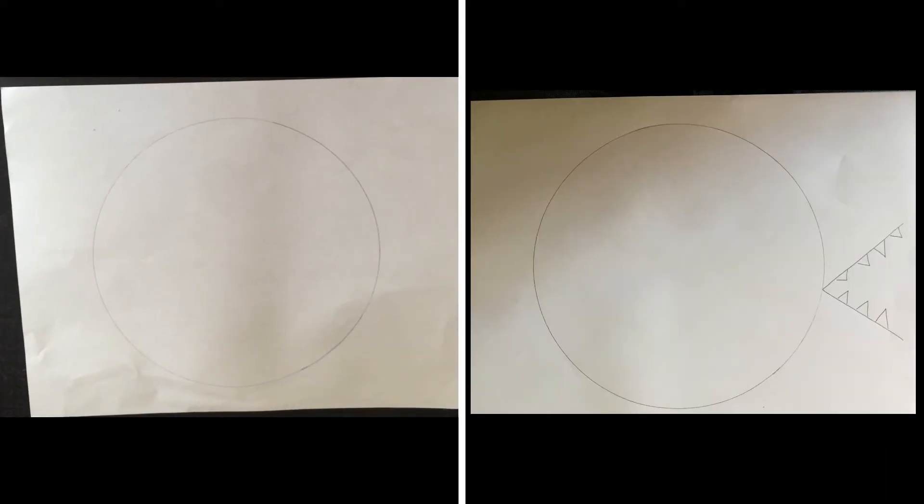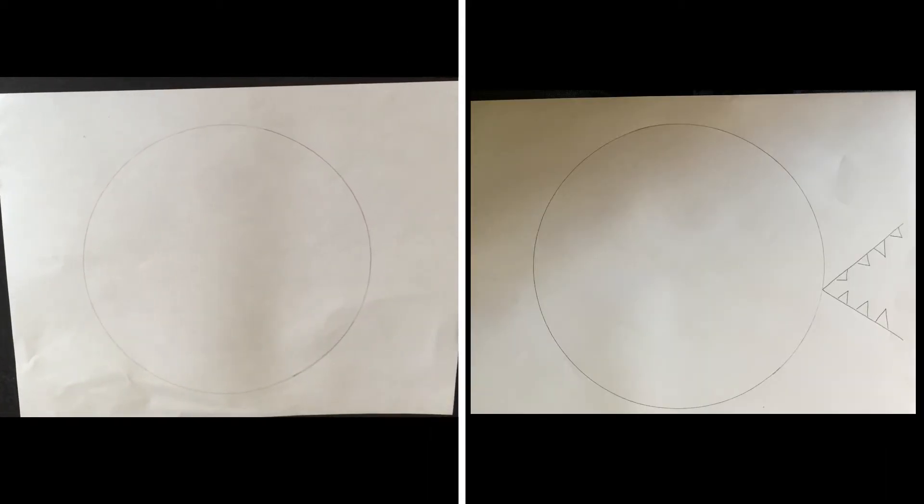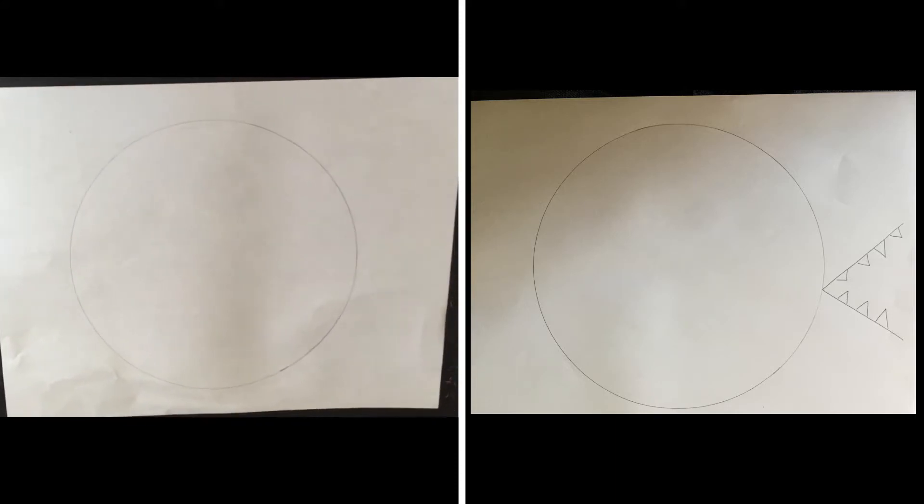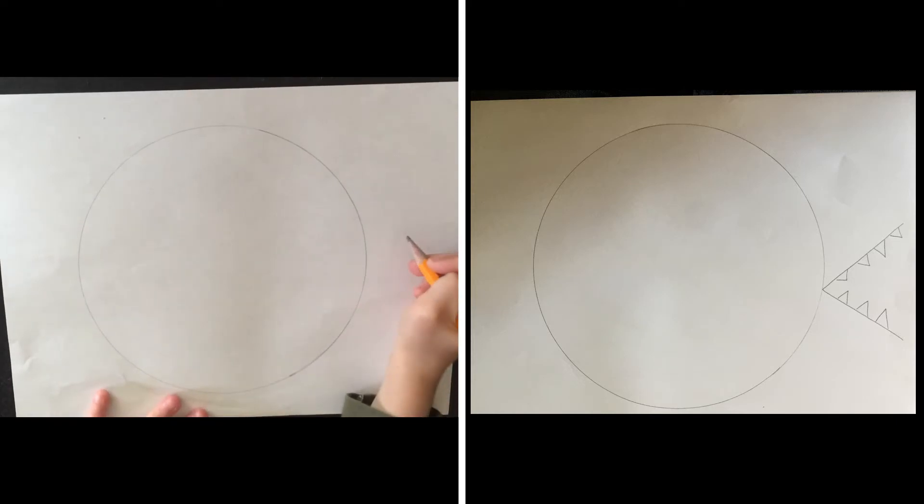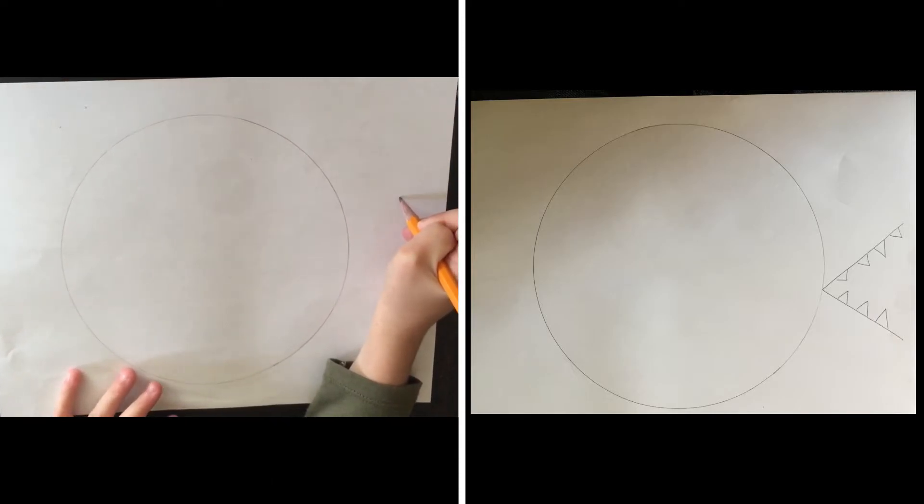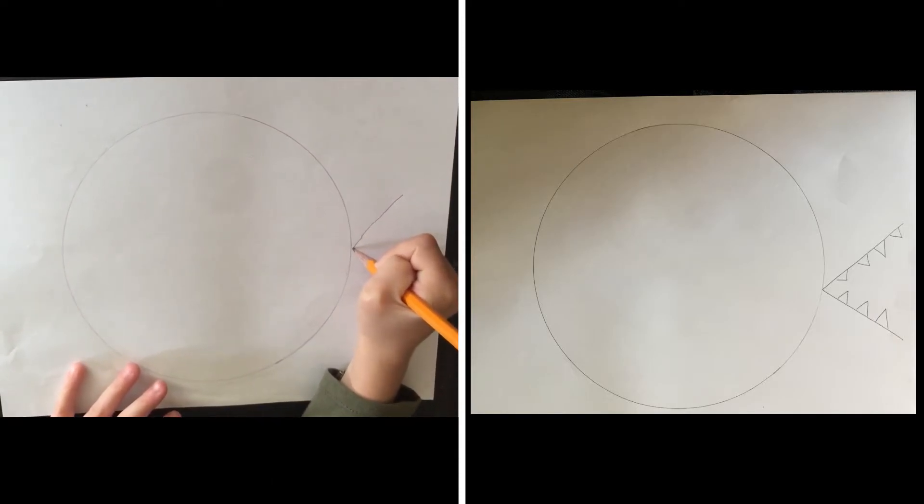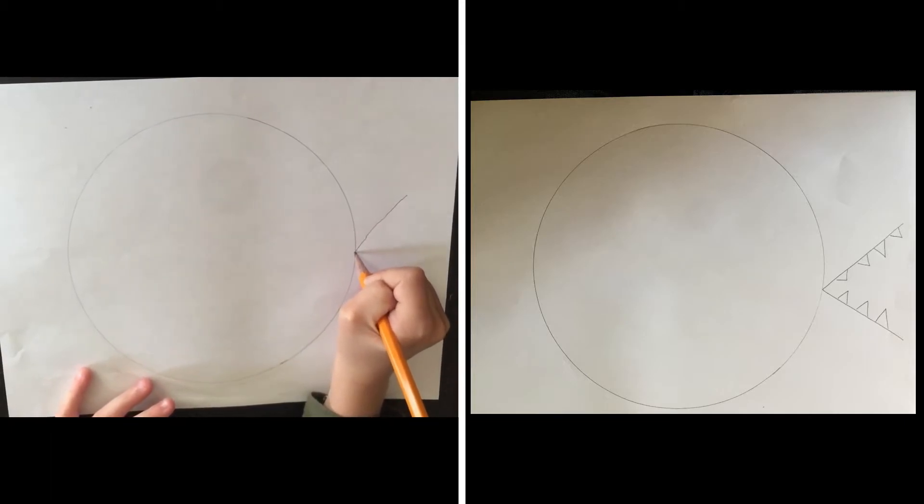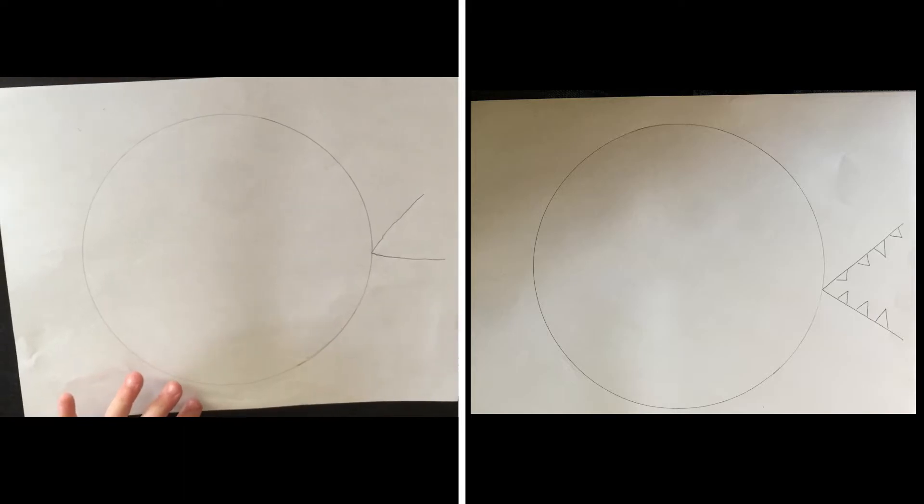Our alligator needs a big wide mouth with lots of sharp teeth, so we're going to choose the left or the right side to make the mouth, and we're going to make the letter V. The V has a diagonal that comes down to the circle and then comes back out again. Good job!